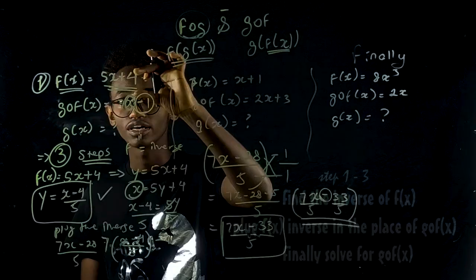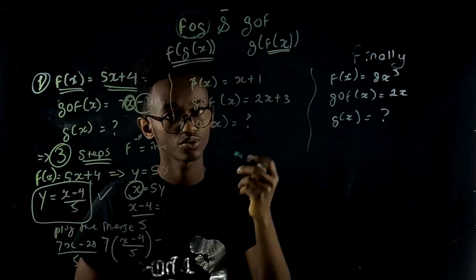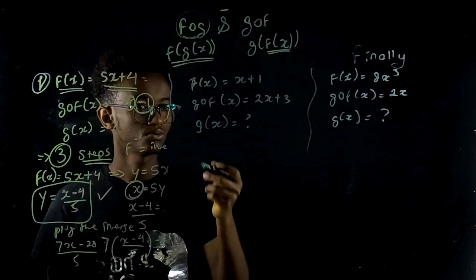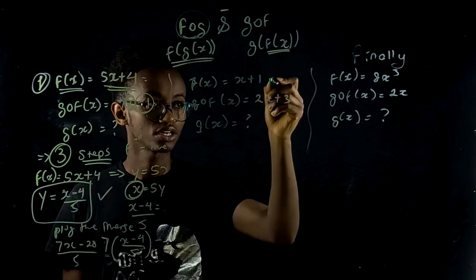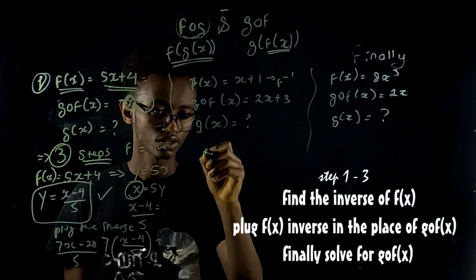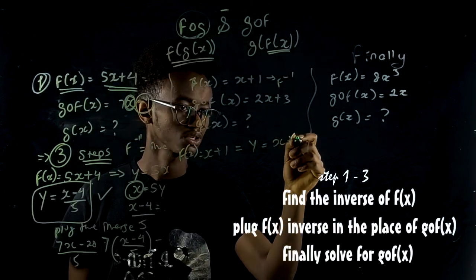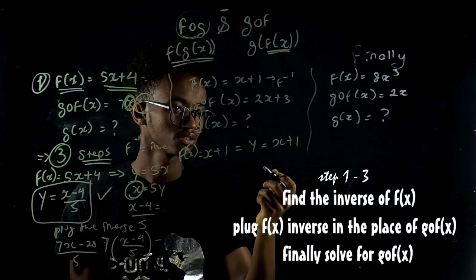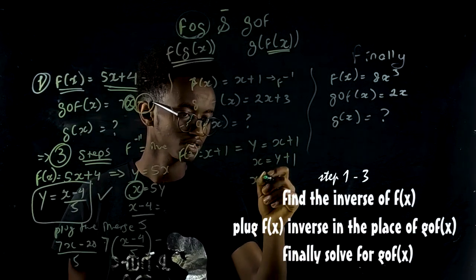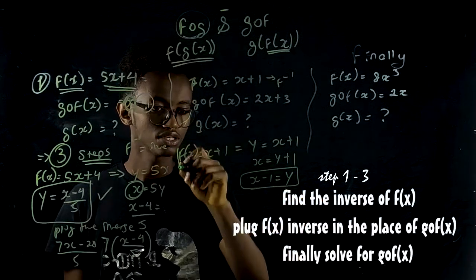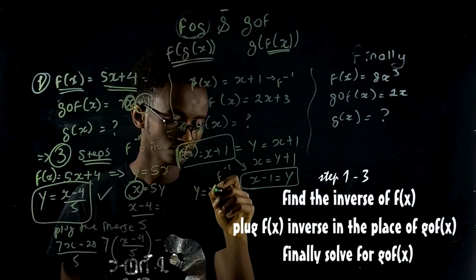First step: find the inverse of f(x). F of x equals x plus 1. Let y equal x plus 1. Swap x and y to find the inverse, which means x minus 1. So the inverse of f(x) is x minus 1.